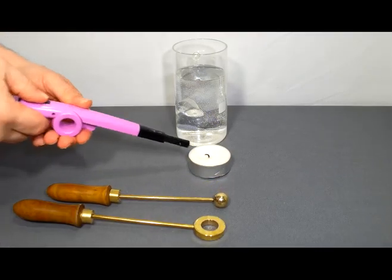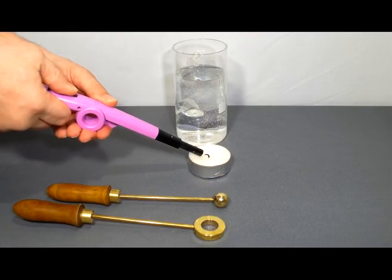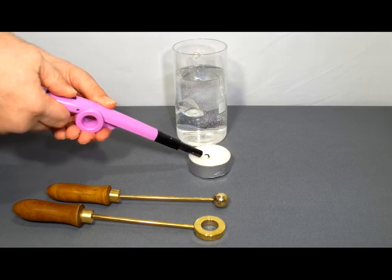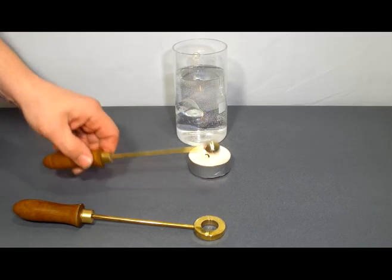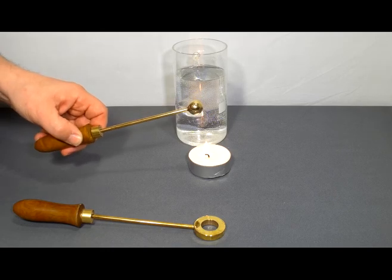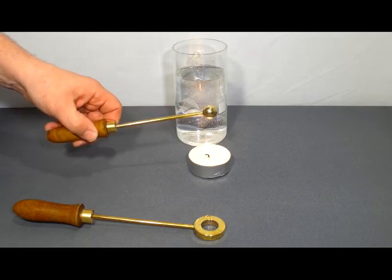Next, you would light this candle or Bunsen burner and then hold this over the flame for about a minute or so until it gets nice and hot and it does expand.